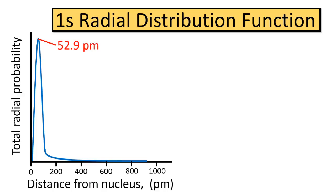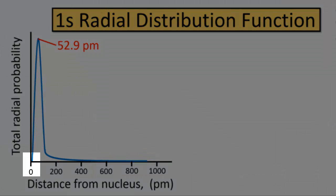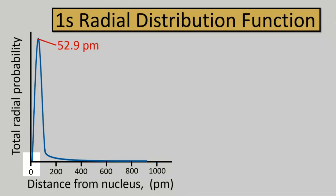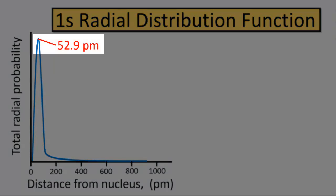So here's what it looks like. Notice that the radial distribution function has a value of zero at the nucleus, because it's impossible for the electron to be existing in the exact same space as the nucleus, and it also has a maximum probability at a radius of 52.9 picometers.